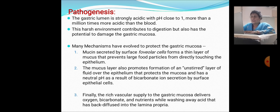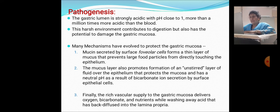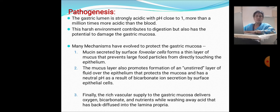Pathogenesis: the gastric lumen is strongly acidic with a pH close to 1, more than a million times more acidic than blood. The harsh environment contributes to digestion but also has potential to damage the gastric mucosa itself. Main protective mechanisms include mucin secretion by surface cells forming a thin mucus layer preventing food particles from touching the epithelium, an unstirred fluid layer with natural pH maintained by bicarbonate secretion from surface epithelial cells, and a rich vascular supply delivering oxygen, bicarbonates, and nutrients while washing away diffused acid.